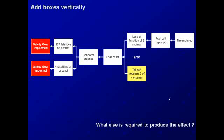We can also add boxes vertically. Frequently, you will have more than one cause required to create an effect. For example, the loss of lift was caused by the loss of function of the two engines. Based on the design of the Concorde, takeoff requires three of the four engines. Both of those causes had to be present in order to result in the loss of lift that brought down the Concorde. You can ask yourself what else is required to produce the effect to ensure that you have all the cause and effect relationships when you are creating your cause map.